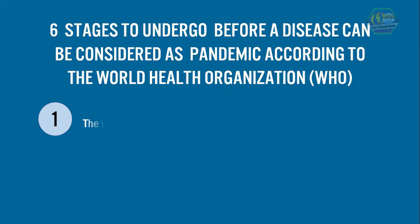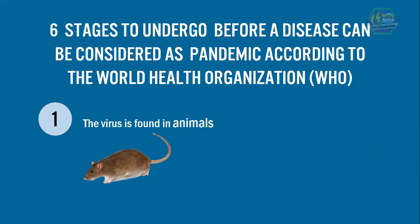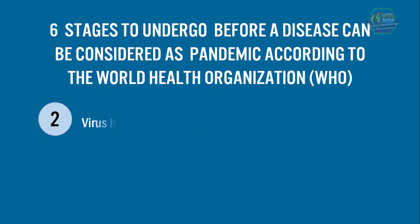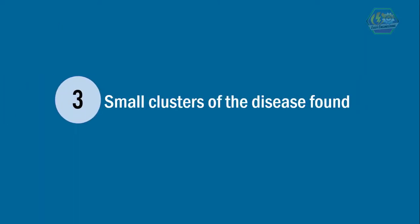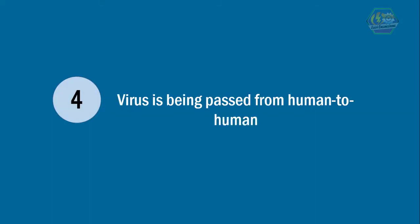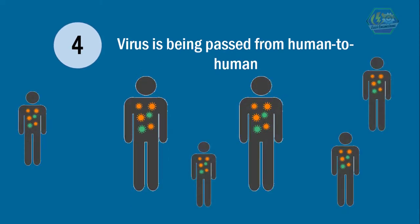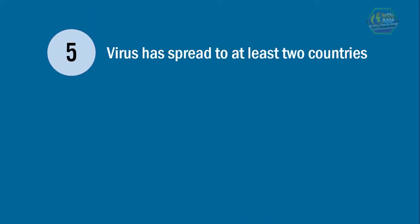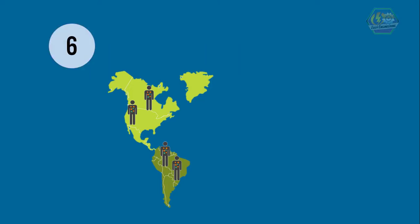First, the virus is found in animals, not in humans. Second, the virus has been found in humans. Third, there are small clusters of the disease found, but it is not spreading rapidly. Fourth, the virus is being passed from human to human and there are community outbreaks. Fifth, the virus has spread to at least two countries — a full-fledged pandemic is imminent. And lastly, the disease is now classified as a full-fledged pandemic.